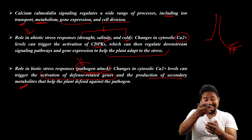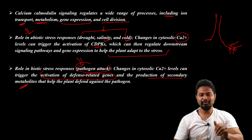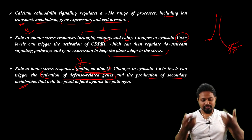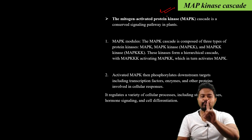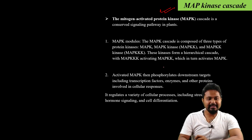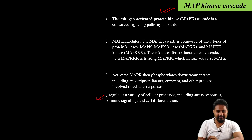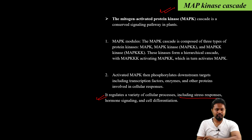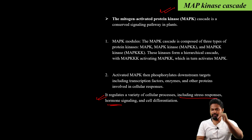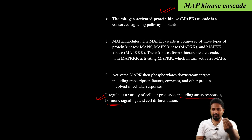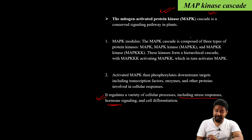So that was calcium-calmodulin. The final topic is MAP kinase cascade, which is very important. MAP kinase cascade helps in cell differentiation and regulates a variety of cellular processes including stress response, hormone signaling, plant cell growth, and organ growth. Hormones such as auxin, cytokinin, and gibberellin activate this cascade. This is a hormonal signaling pathway, and MAP kinase cascade is very important.